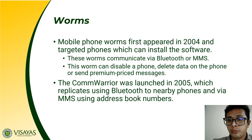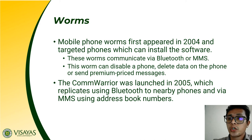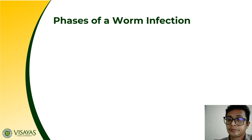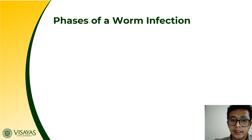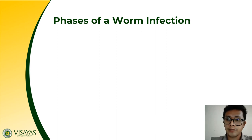We also have the Comm Warrior, which was launched in 2005, which also replicates using Bluetooth and via MMS using address book numbers. These are some examples of worms. Again, worms are self-replicating programs. Since they are self-replicating, they don't need a host program to infect. They can infect by themselves and do damage just like what a computer virus can do.